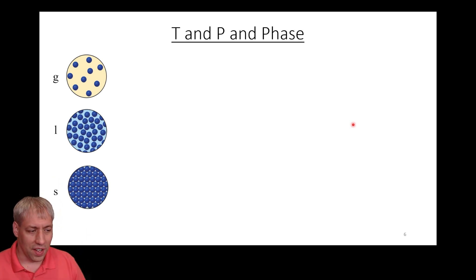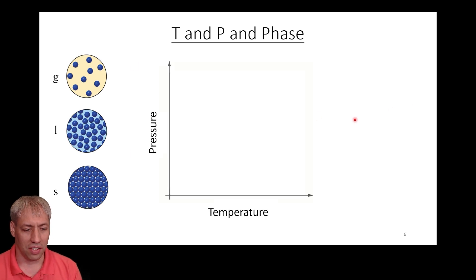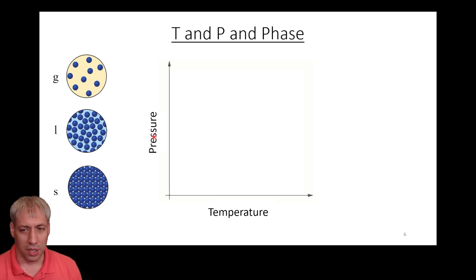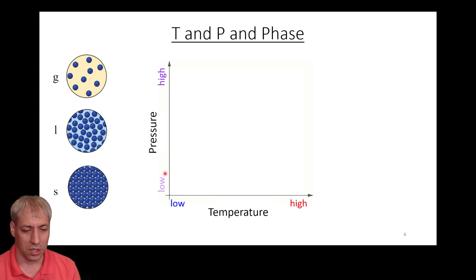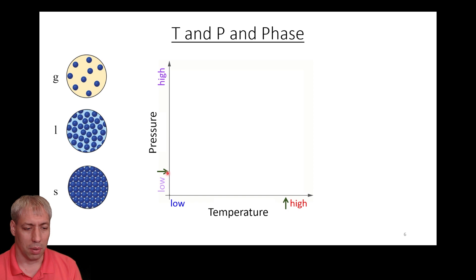If we're looking at different phases — gas, liquid, or solid — there's obviously a temperature and pressure relationship between various conditions. So if we make a graph with temperature on the x-axis and pressure on the y-axis, we can take a material, apply whatever pressure and temperature we want, and measure what phase the system is in. Let's pick a point at relatively high temperature and low pressure — we find it's a gas, so we label that G.